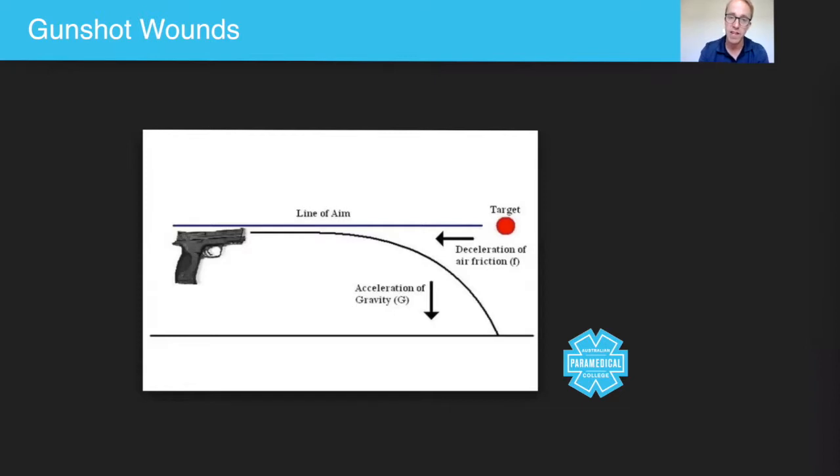When somebody fires a handgun, there are lots of different variations as to what can happen with that bullet. The first thing to consider is that the severity of the injury depends on the distance away from the actual gun itself, the type of gun, and the size of the bullet.